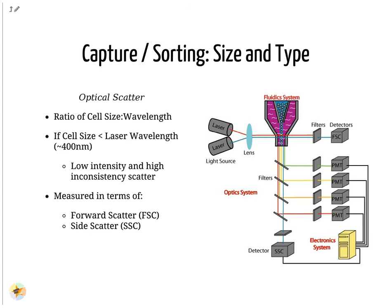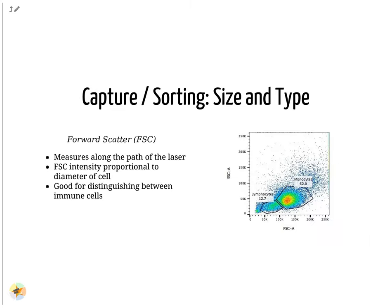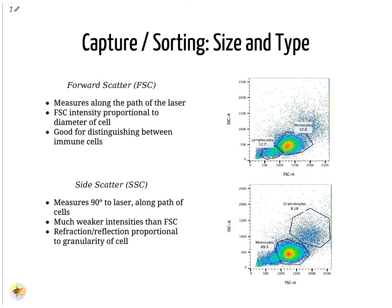Optical scatter properties can be used to probe size and consistency of the cell, where cells with a smaller size than the laser wavelength yield lower intensities and more inconsistent scatter patterns. There are two main types of optical scatters: forward scatters and side scatters. Forward scatter is aligned with the main laser and measures the diameter of the cell, ideal for distinguishing different cells by their size profiles, for example monocytes, which are typically larger than lymphocytes. Side scatter is perpendicular to the main laser and measures the granularity of the cell, ideal for distinguishing cells with less defined internal structures, such as granulocytes.